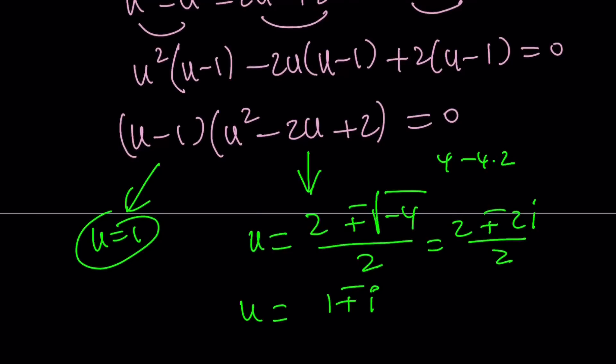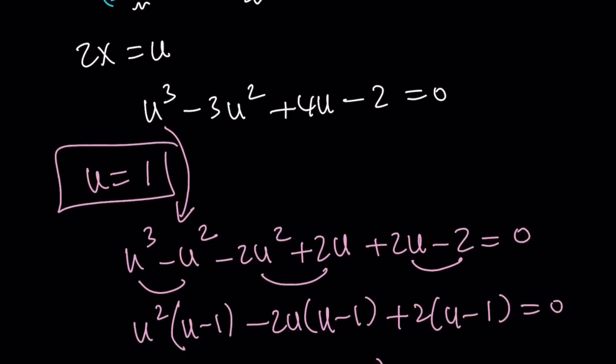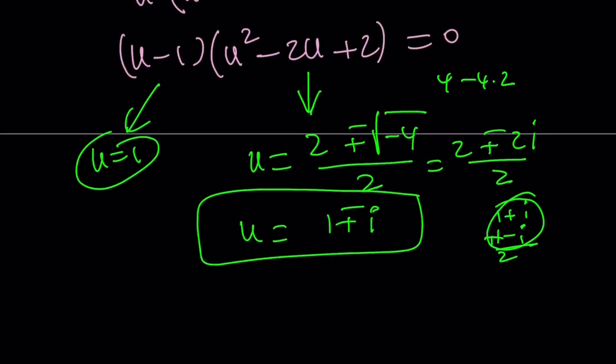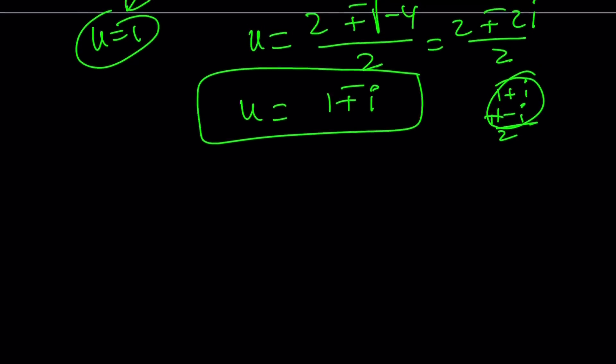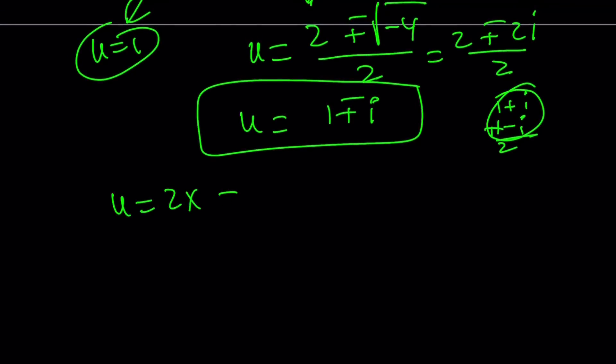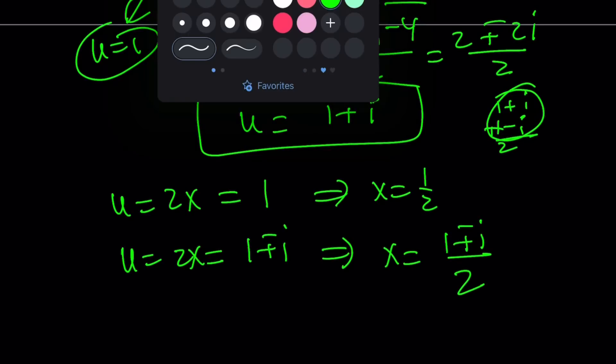So we can definitely check that this is going to work because if you add 1 + i and 1 - i from Vieta's formulas, that's going to give you 2. If you multiply, you're going to get 2. So we got the values of u, but u is not what we're trying to solve for. Remember, we're looking for x and u is equal to 2x. So u is equal to 2x. And if it equals 1, then from here, x equals 1/2. And if u is equal to 2x and that is equal to 1 ± i, then from here, x equals (1 ± i)/2. Actually, those are going to be the solutions.